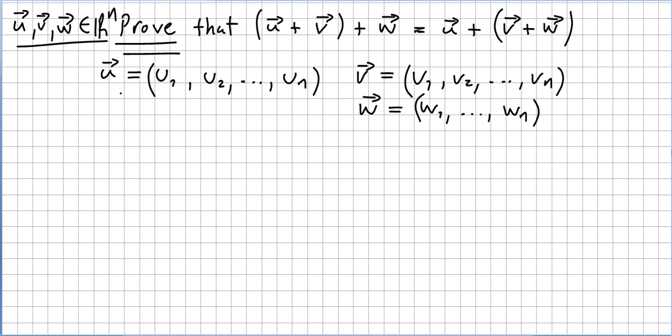So vector u will have components u1, u2, ..., un, and vector v will have components v1, v2, ..., vn, and vector w will have components w1, ..., wn.